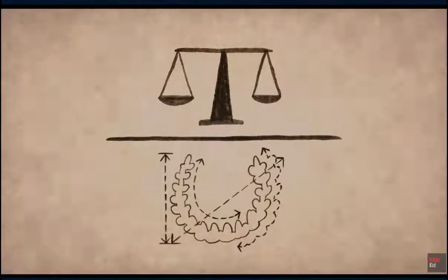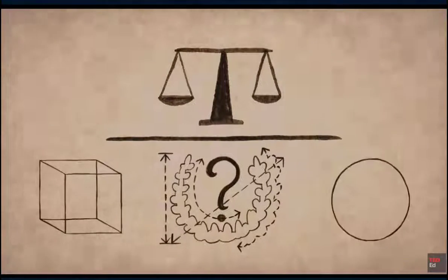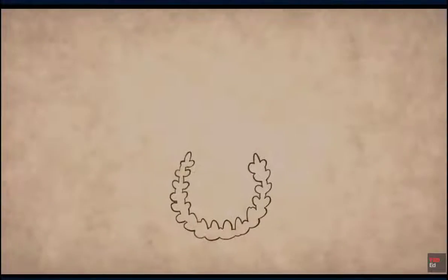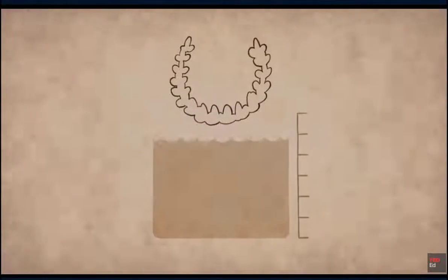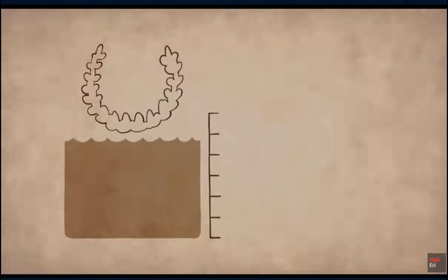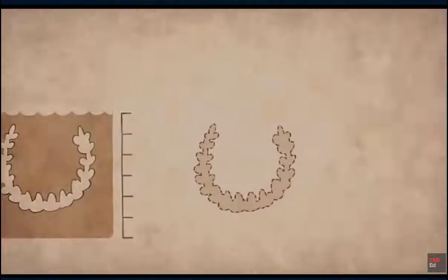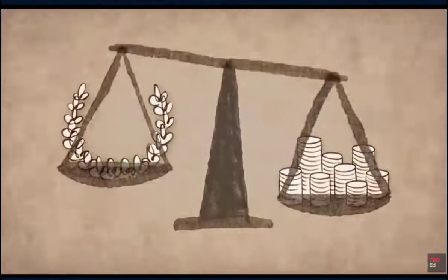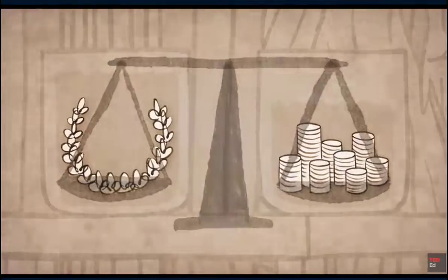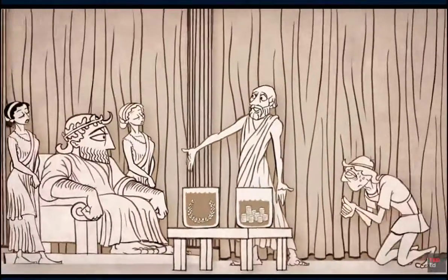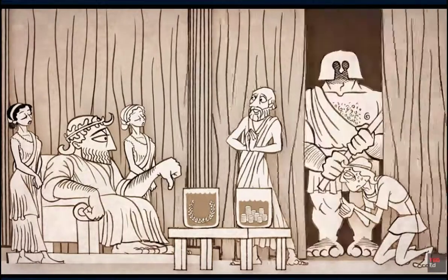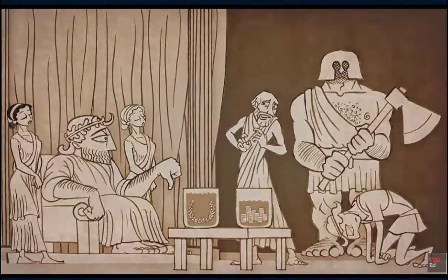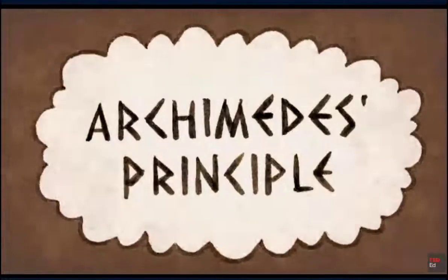The crown had an irregular shape, so you couldn't measure its sides and multiply. The solution was to give the crown a bath — by placing it in water and seeing how much water was displaced, he could measure its volume. He then calculated the density of the crown. If it was less dense than pure gold, the goldsmith had cheated. His test confirmed that the goldsmith had indeed slipped some silver in.